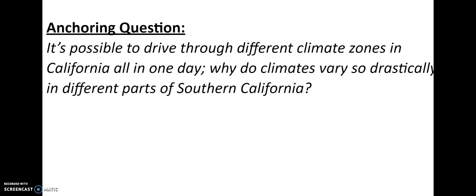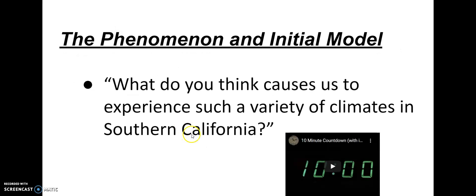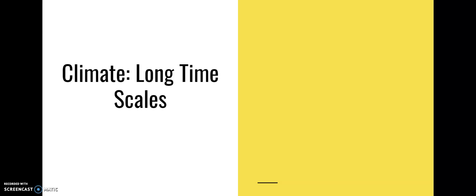We need to know why we have those different climates and what actually makes a climate. We also have a phenomena initial model — I want you to think about probable causes for why we experience a variety of climates in Southern California. There's a 10-minute timer for this. Now I'm going to show you a couple of pictures. This first one is a picture representing climate on long time scales — what does it remind you of?